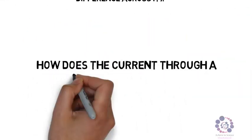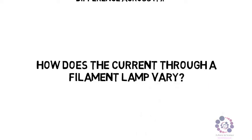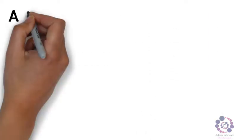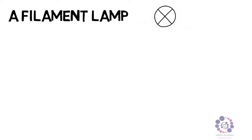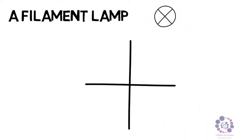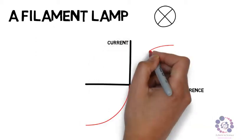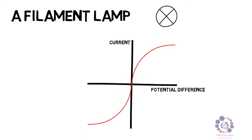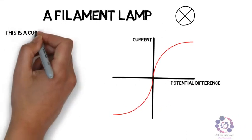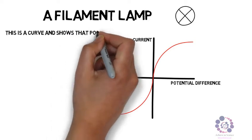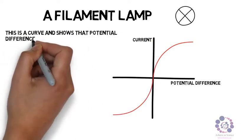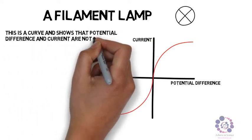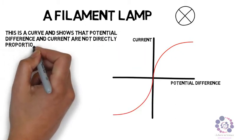Let's apply this then to see how the current varies through a filament lamp. So here we have a filament lamp. Let's now draw a current potential difference graph to see how resistance varies. As you can see we have an S shape to this graph. This is a curve, and it shows that the potential difference and current are not directly proportional — it is not a straight line. Therefore this is an example of a non-ohmic resistor.